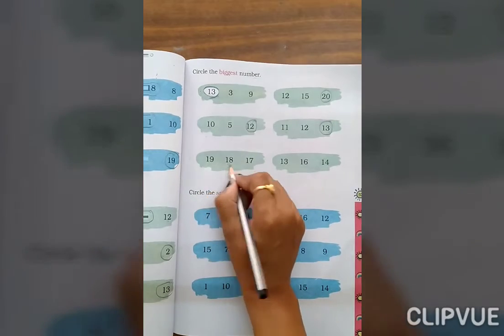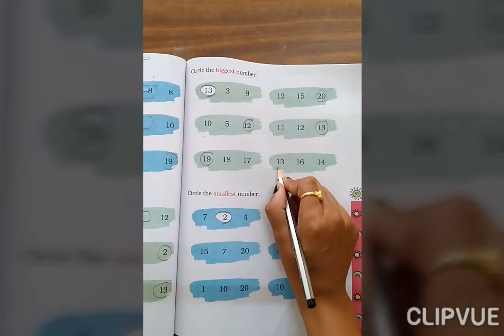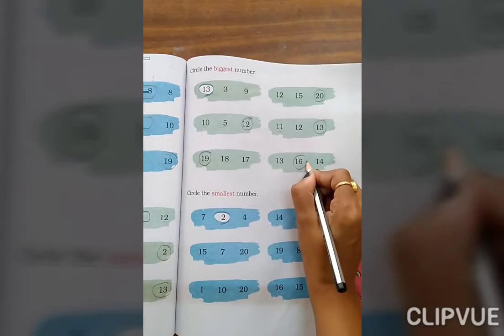19, 18, 17. Then 19. 13, 16, 14. Biggest number is 16.